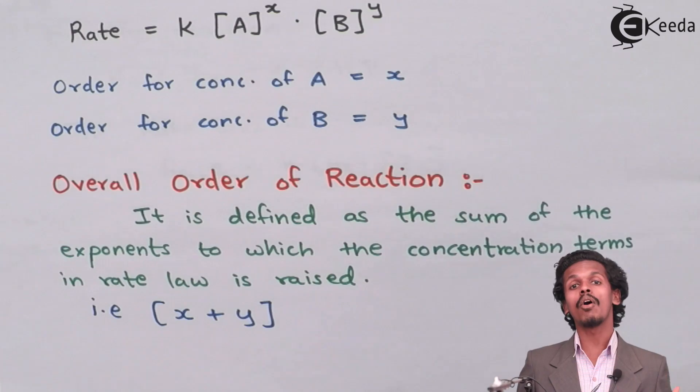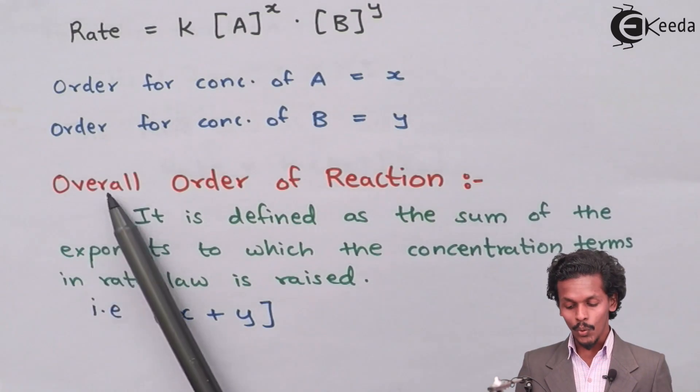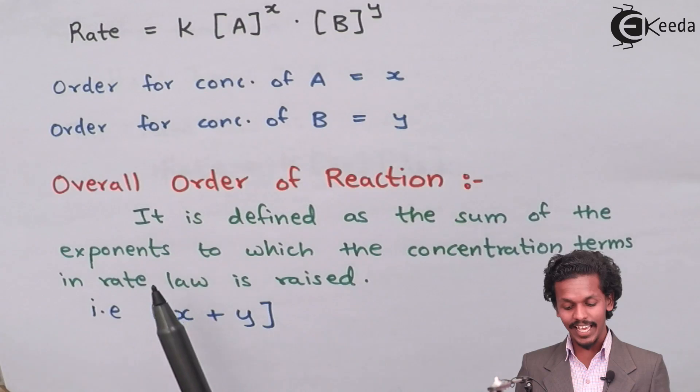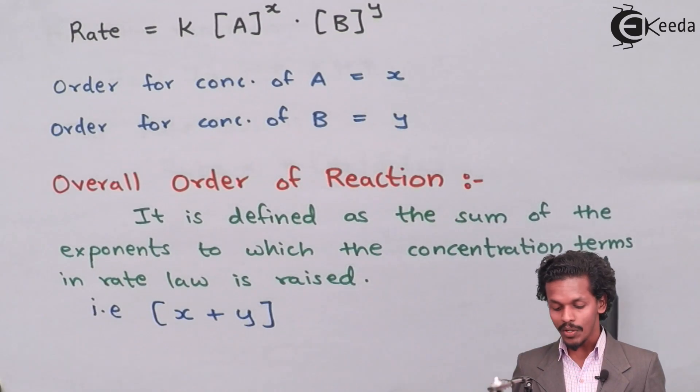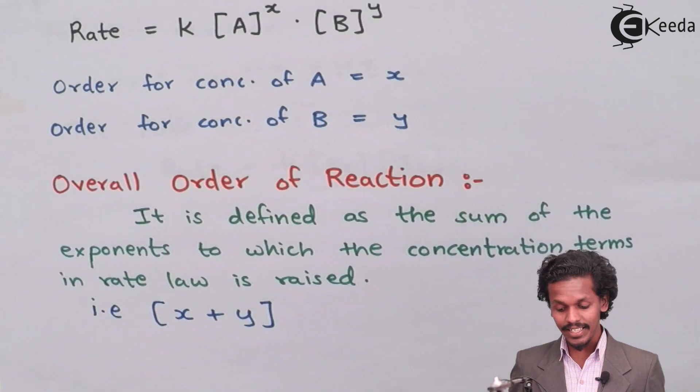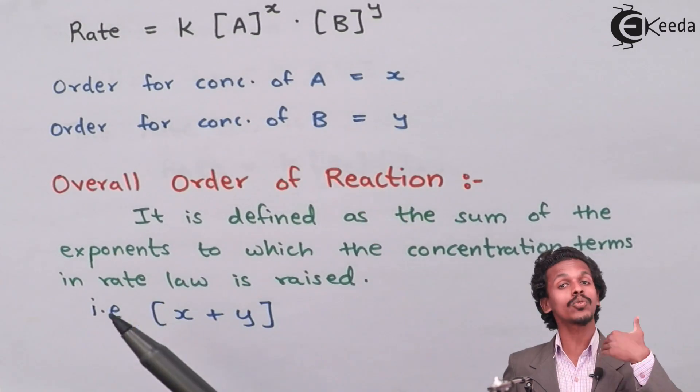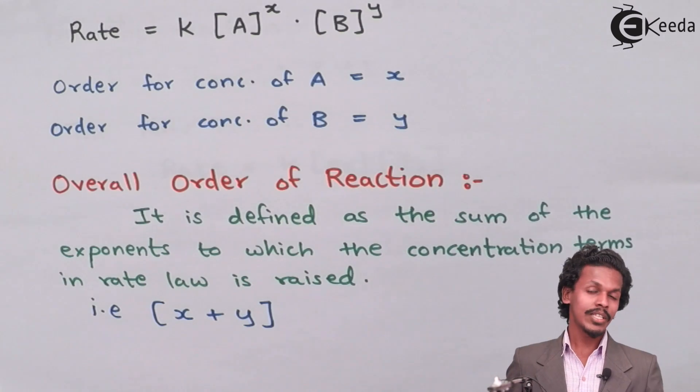So the order of the concentration of A is X and the order of concentration of B is Y. So the overall order of reaction will be what? The overall order of reaction will be the sum of the exponents, that is experimental exponents to which the concentration terms are raised.